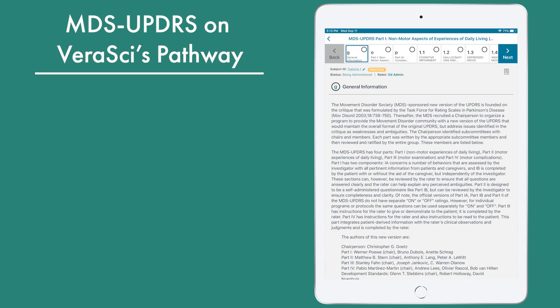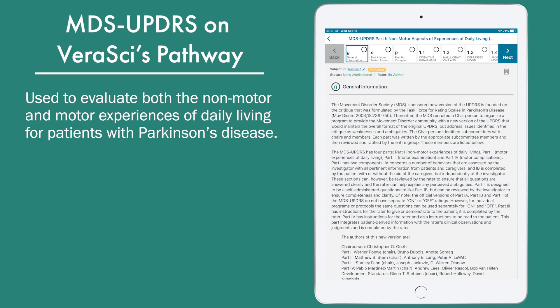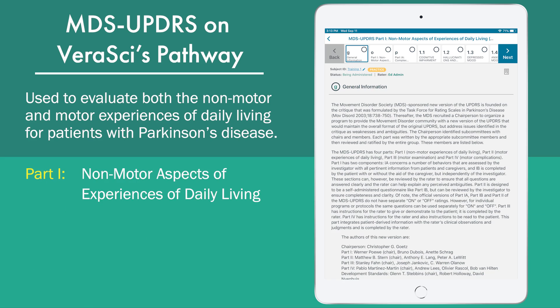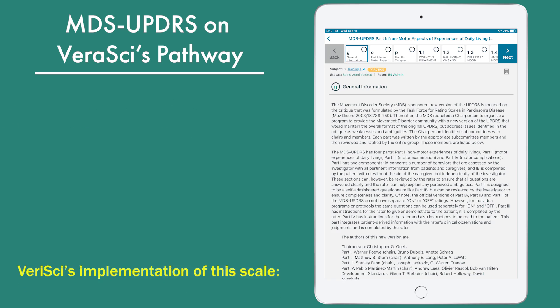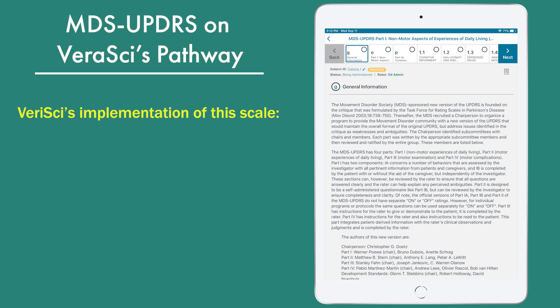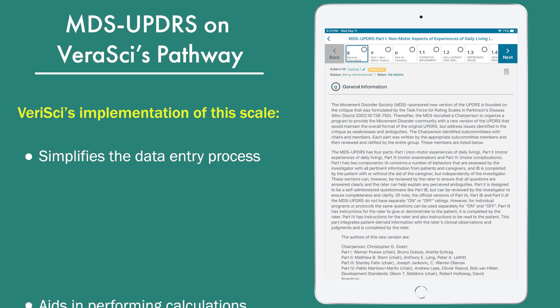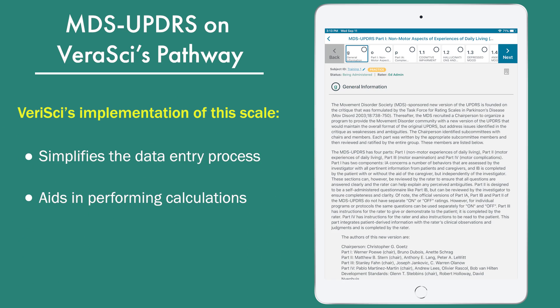The MDS-UPDRS is used to evaluate both the non-motor and motor experiences of daily living for patients with Parkinson's Disease. It consists of four parts. VeriSci's implementation of this scale simplifies the data entry process and aids in performing calculations.